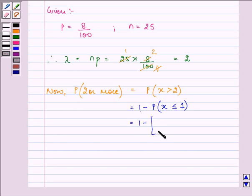This further implies 1 minus bracket, probability that X is equal to 1 plus probability of X is equal to 0.